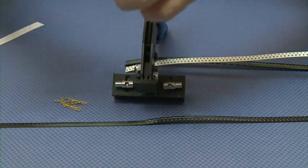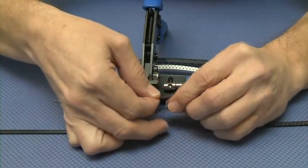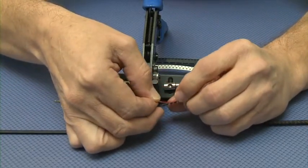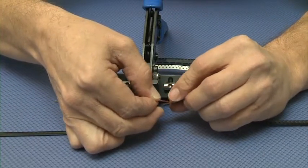The cover tape connectors are size specific, so you have to have one for 8, one for 12, one for 16, one for 24 millimeters.